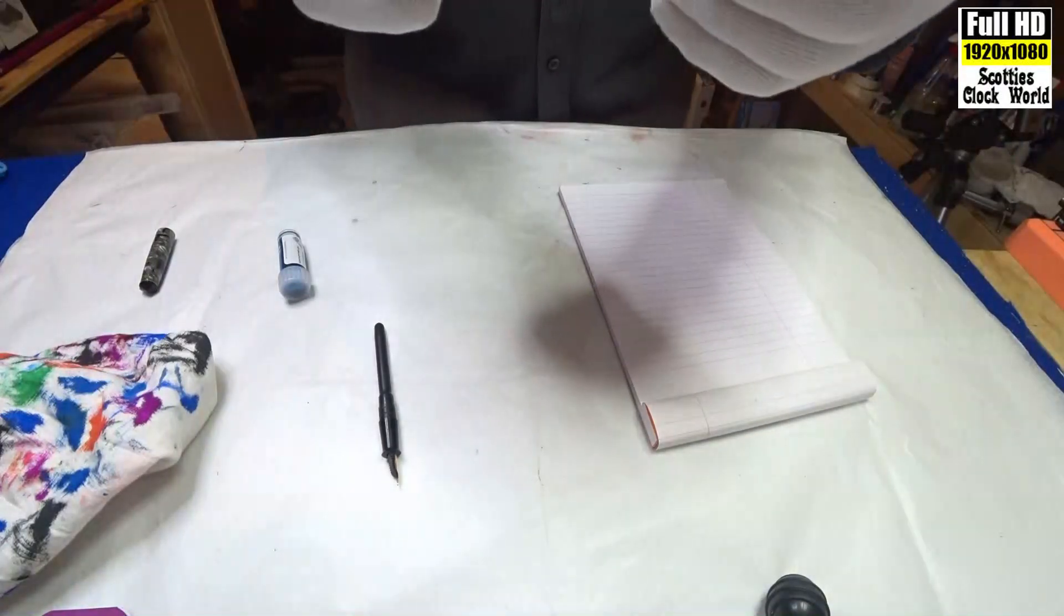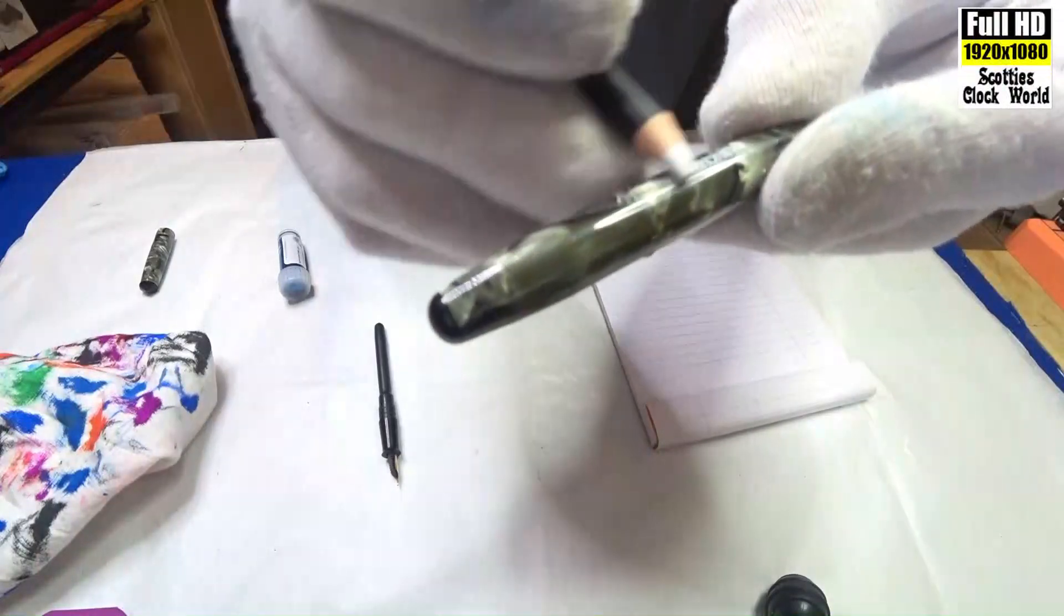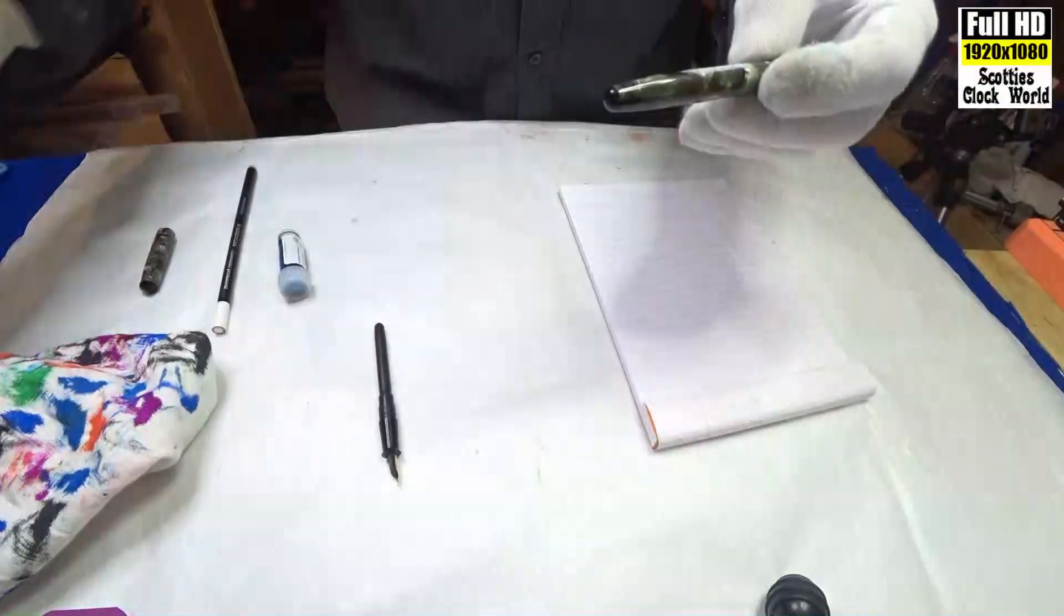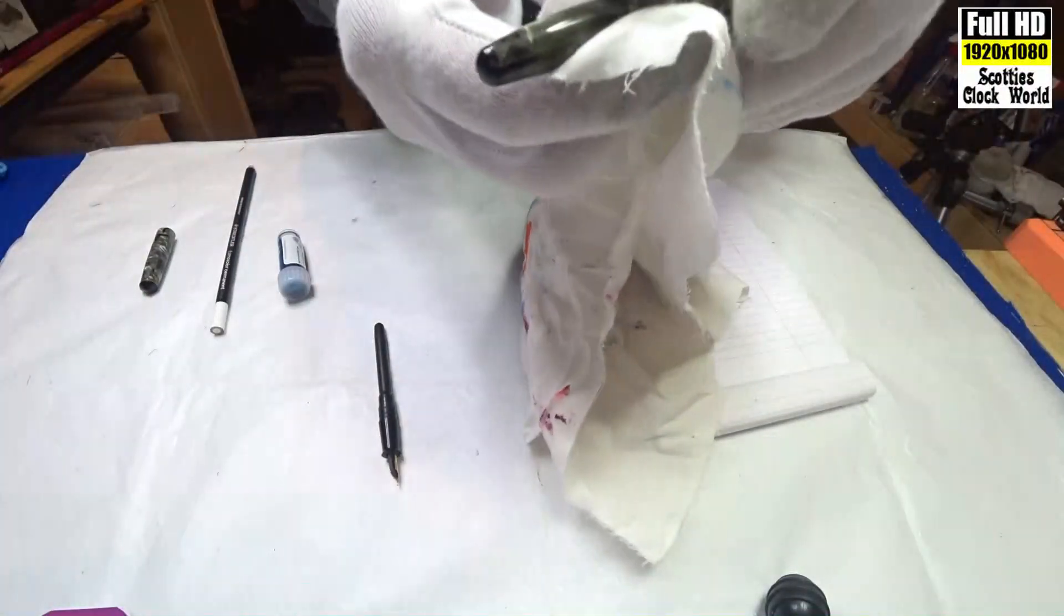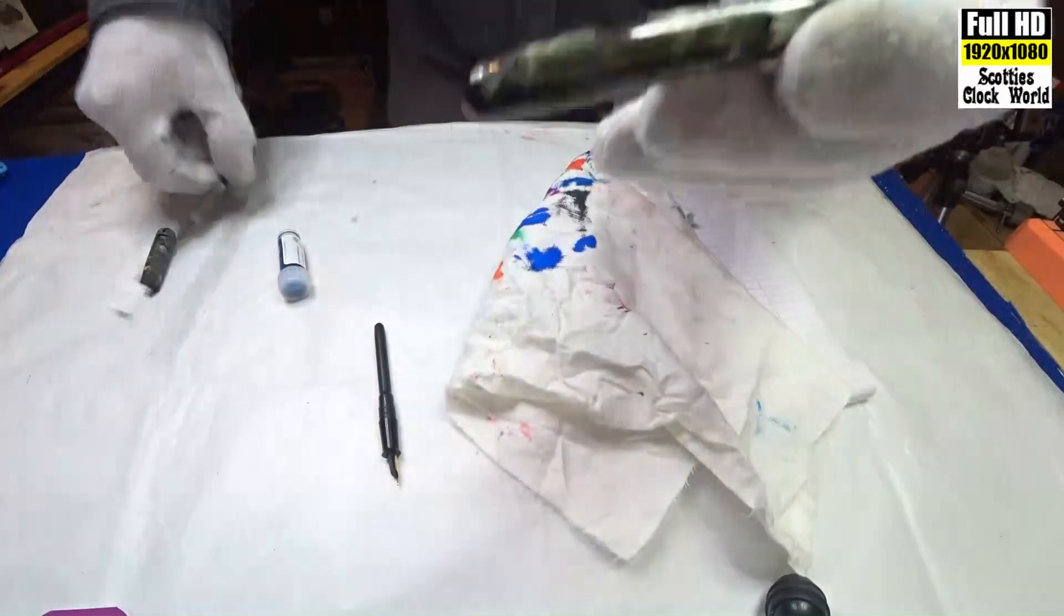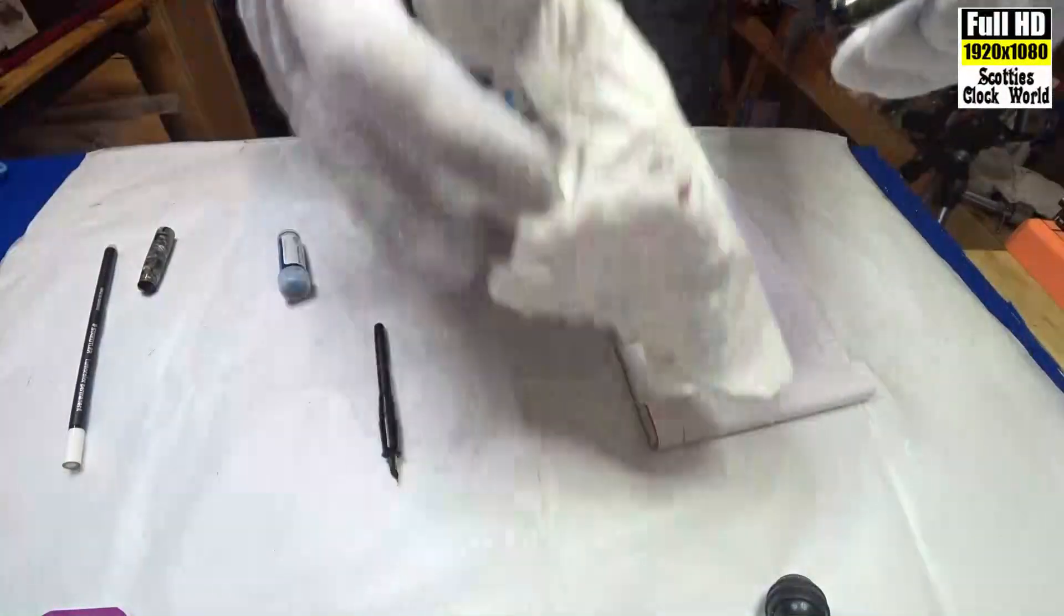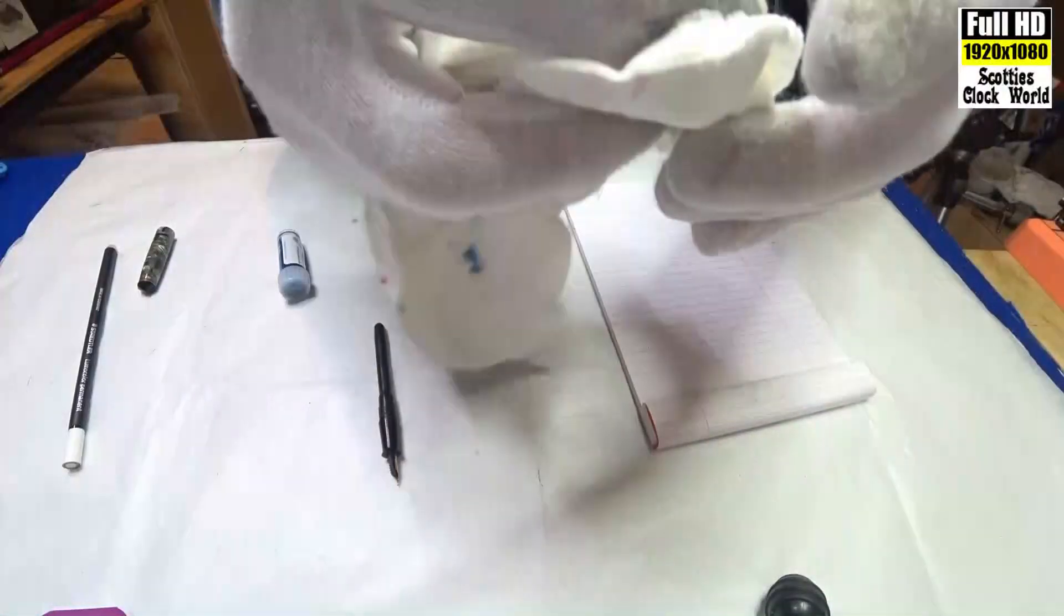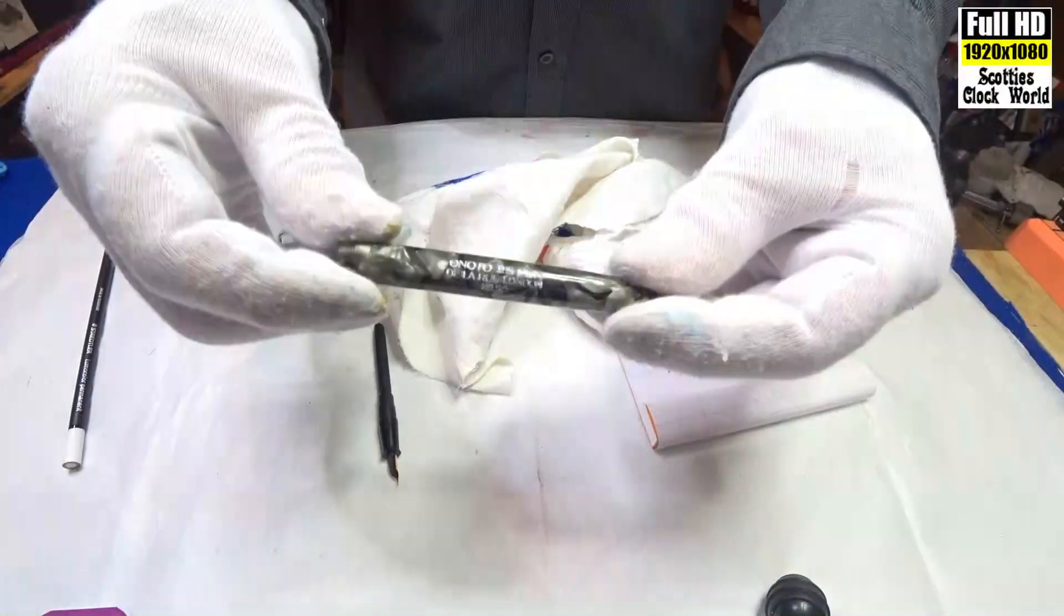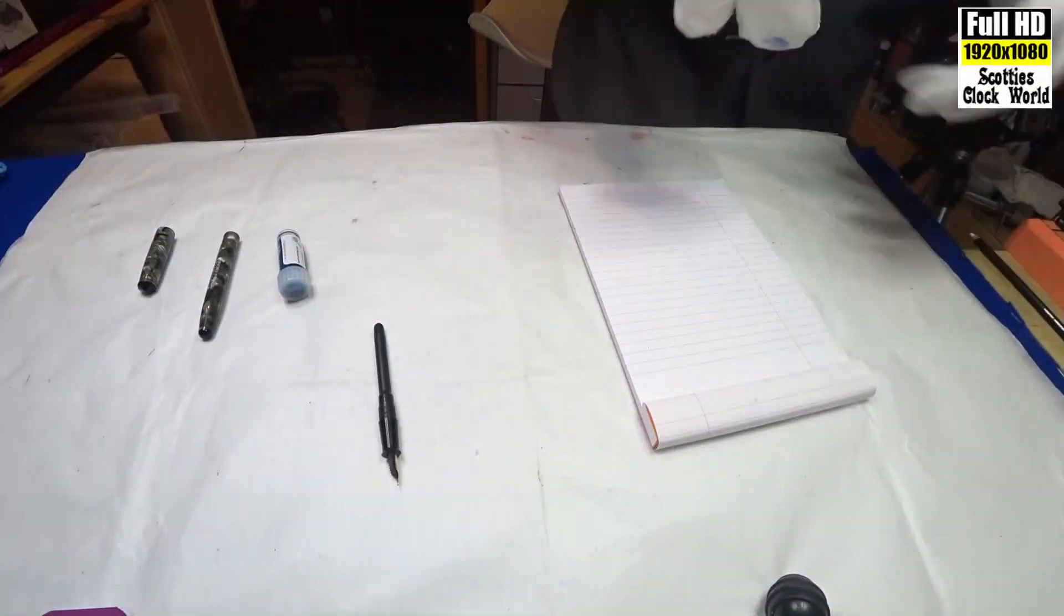Last thing I do before we ink the pen. Is over the imprint here. I'll run the China graph pencil over the top. Just like so. Then very carefully wipe it off. Needs a little bit more. And it just highlights it. There we see it. Brings it up nicely. Put that aside.